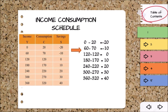The table shows that consumption is an increasing function of income because consumption expenditure increases with the increase in the level of income. When income is zero, people spend out of their past savings on consumption, because they must eat in order to live. This is called autonomous consumption — consumption that takes place even without income.